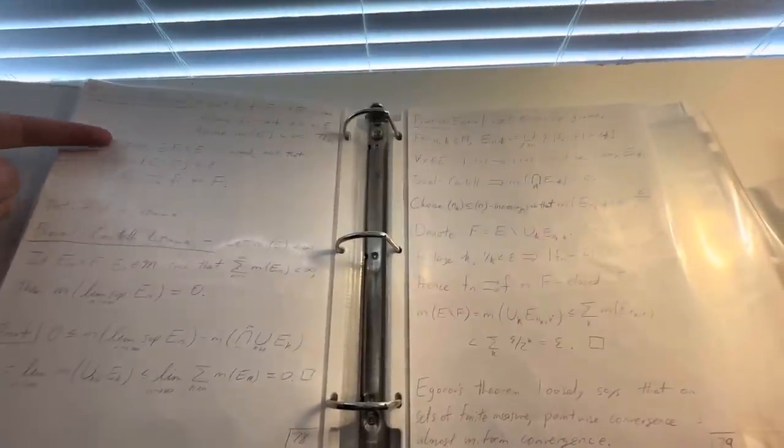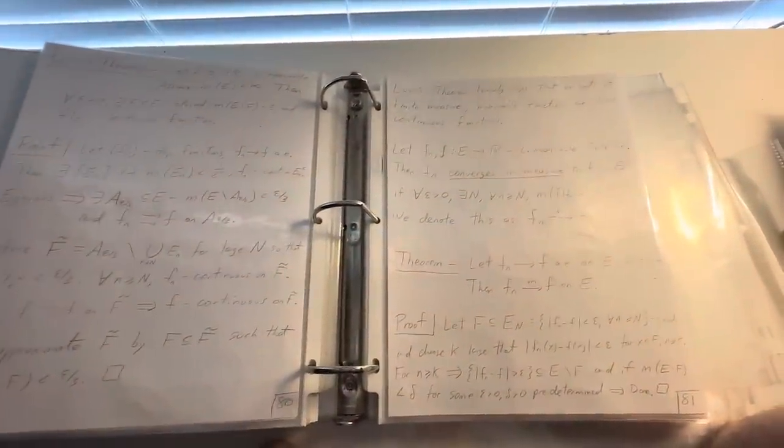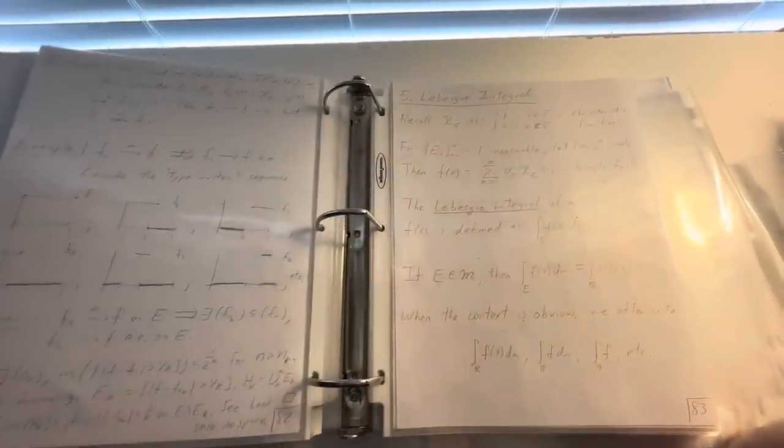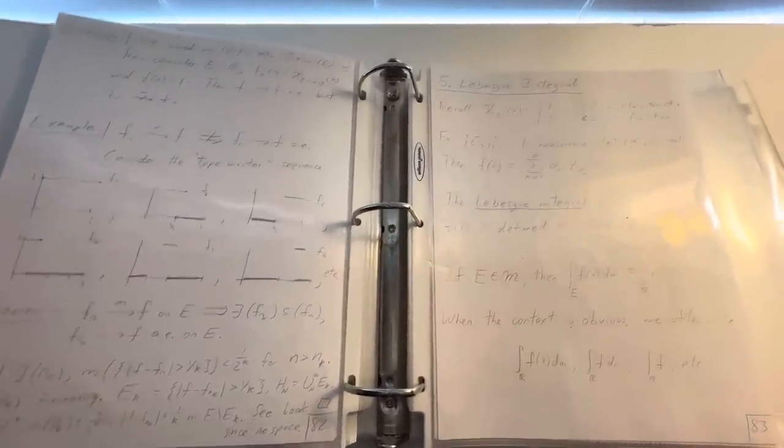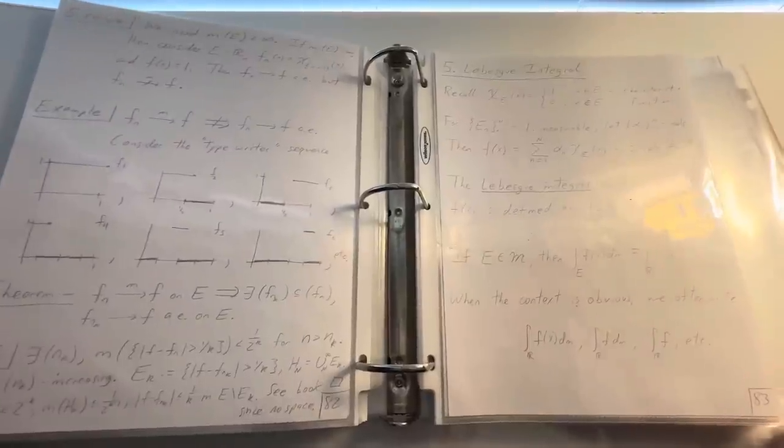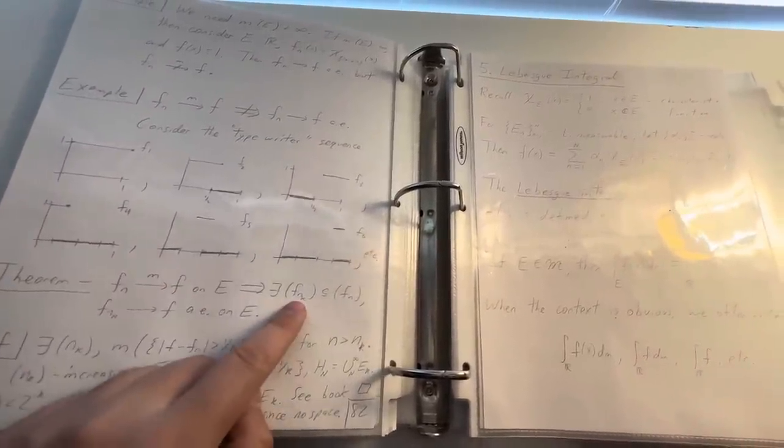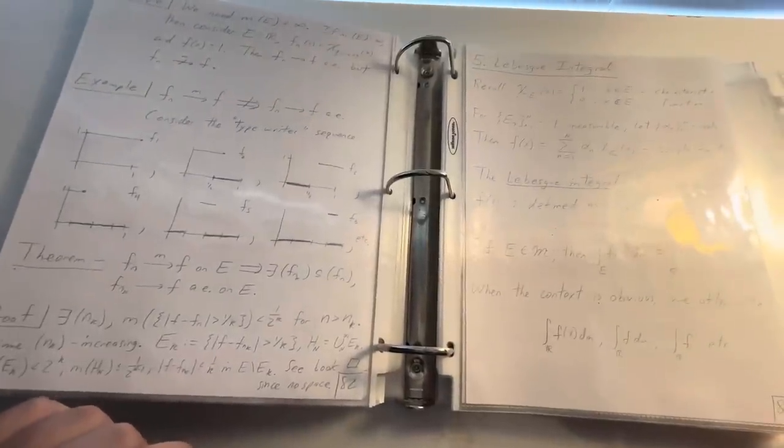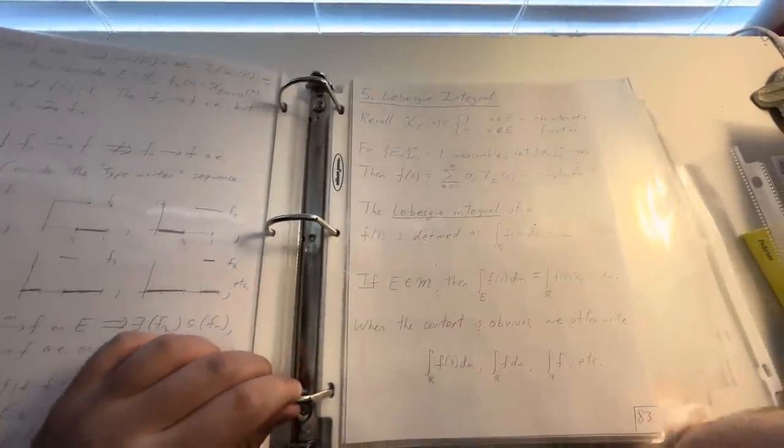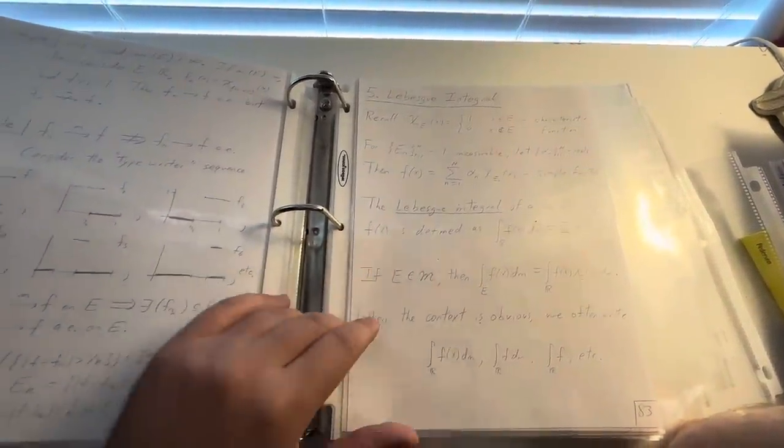Big Bad Egorov's theorem. Borel-Cantelli lemma, my favorite. Lusin's theorem, which I've yet to memorize. This theorem, I'm pretty good at now. There's my quote-unquote typewriter sequence. I call it that. I don't think anyone else calls it that. It helps me remember what exactly goes on here. And then you have this theorem, which says that if you have convergence in measure on a set, then there exists a subsequence that converges pointwise.